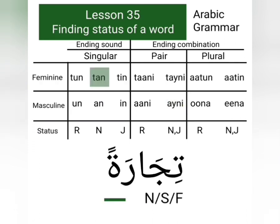Today's last example is the word tijaratan. This word has no feminine ending combination taani, taini, aatun, or aatin. We look for the ending sounds of the feminine words — this word does not have the ending sound tun, but it has the ending sound tan. Singular feminine words having ending sound tan have the status nasab. So we write with tijaratan: n, s, f — n means nasab, s means singular, and f means feminine.